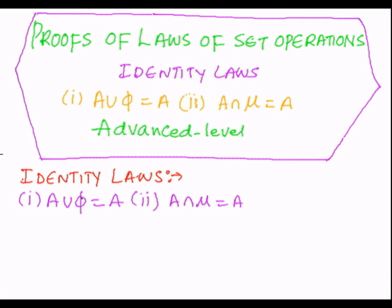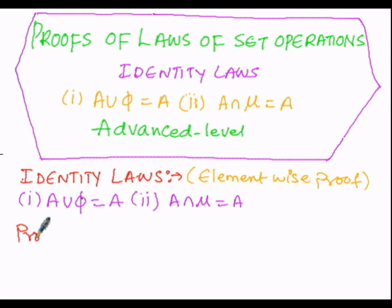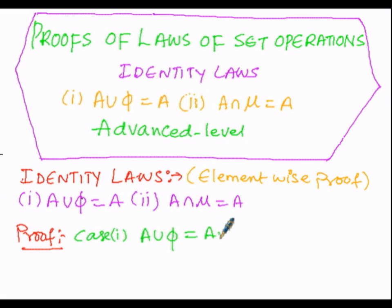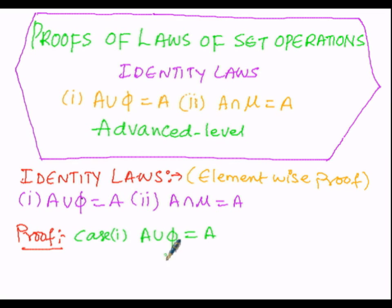We are going to prove these two conditions by means of element-wise proof. To prove A union φ equals A, we first need to prove two sub-cases: first, A union φ must be a subset of A, and second, A must be a subset of A union φ.